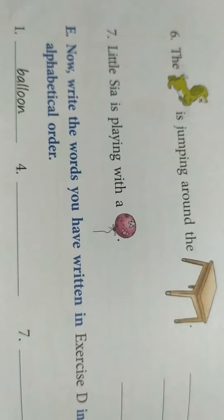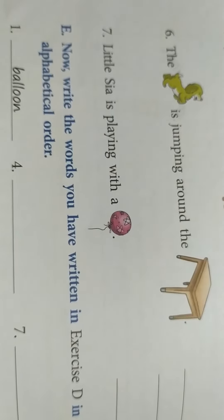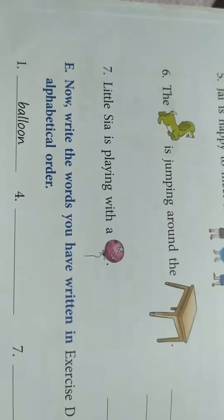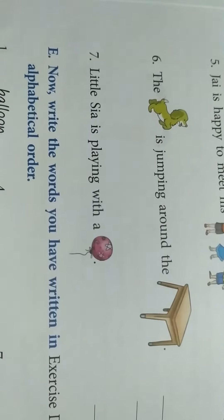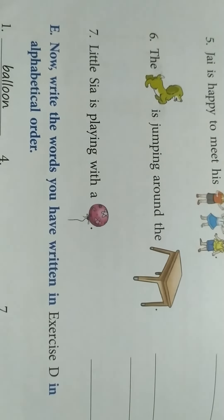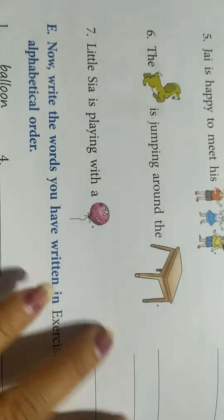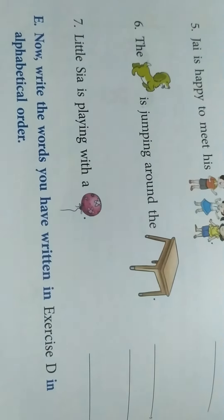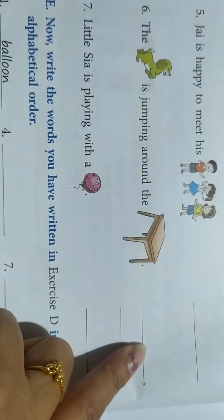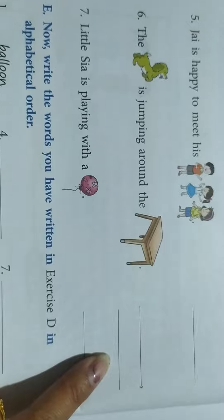Question number 6. The dash is jumping around the dash. This is a picture of a dog. So in the first blank, you have to write dog. And in the second blank, what do we have? Table. So you write dog in the first blank and table in the second blank.